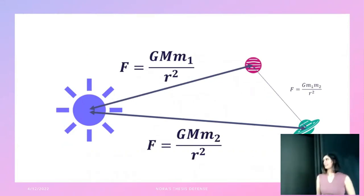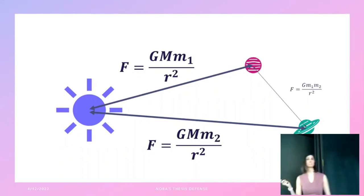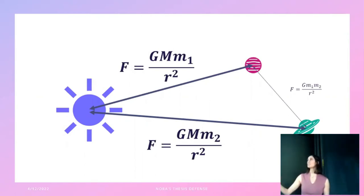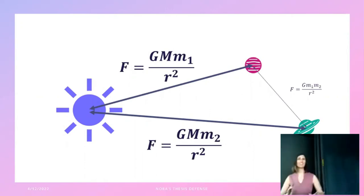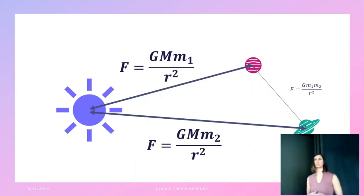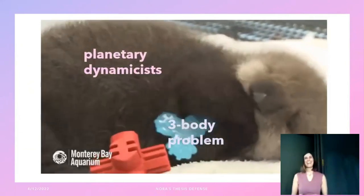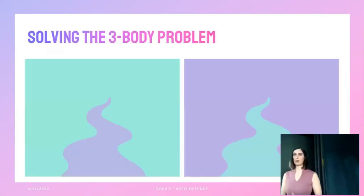Even though the equations look relatively simple, that's deceptive — all the distances r are different, changing over time based on these forces. It turns out it's literally impossible to write out the exact way planet positions will change over time. This is called the three-body problem, and scientists have been chewing on it since Newton. There are basically two paths to solve it as well as we can: the analytical path, using equations that approximate the system's behavior, or the numerical path, using computers to brute-force solve the equations of motion.